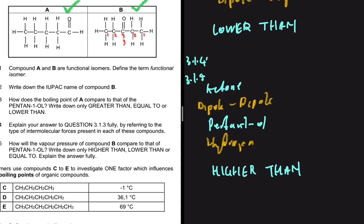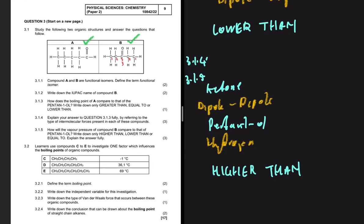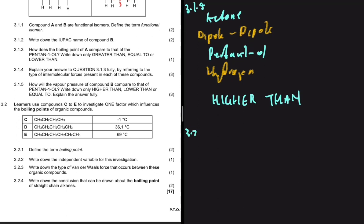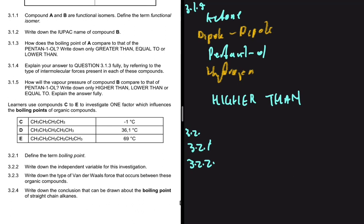For 3.2.1, we define the term 'boiling point.' The old definition — the temperature at which a liquid turns to gas — is no longer used at this level. The correct definition is: the temperature at which the vapor pressure equals the atmospheric pressure.